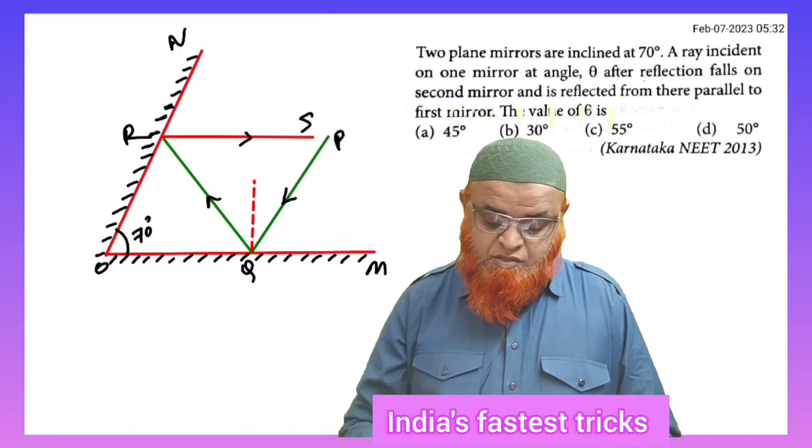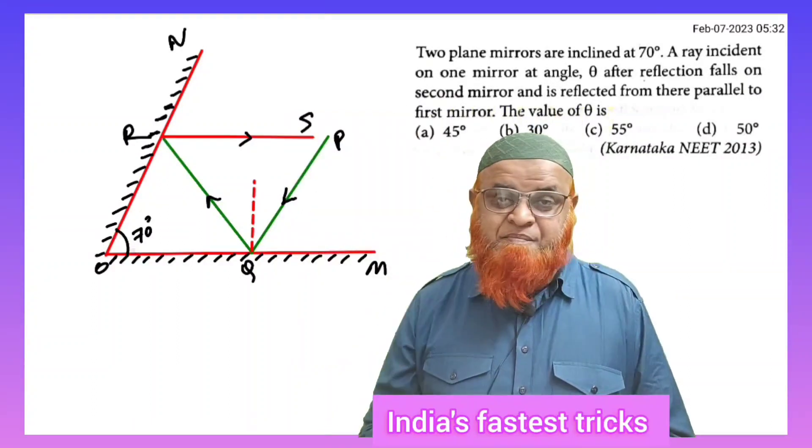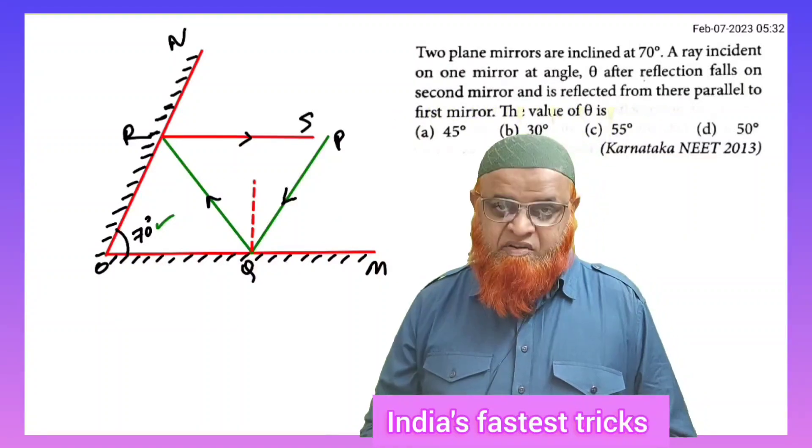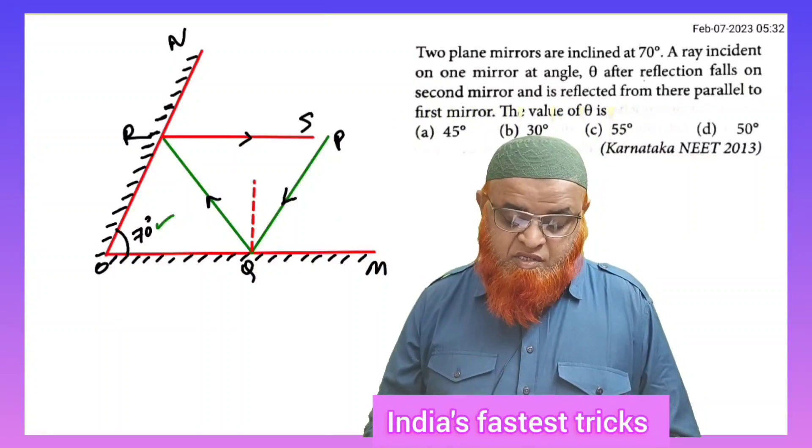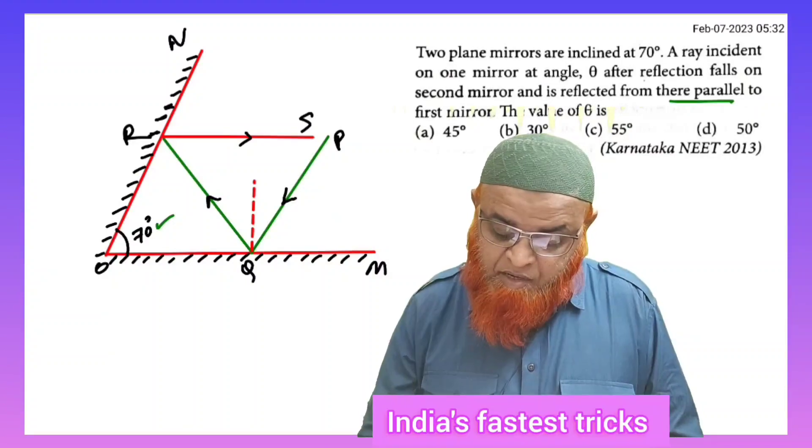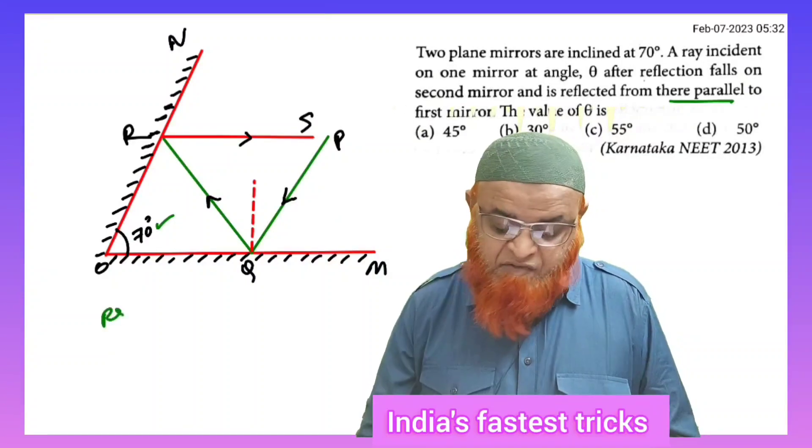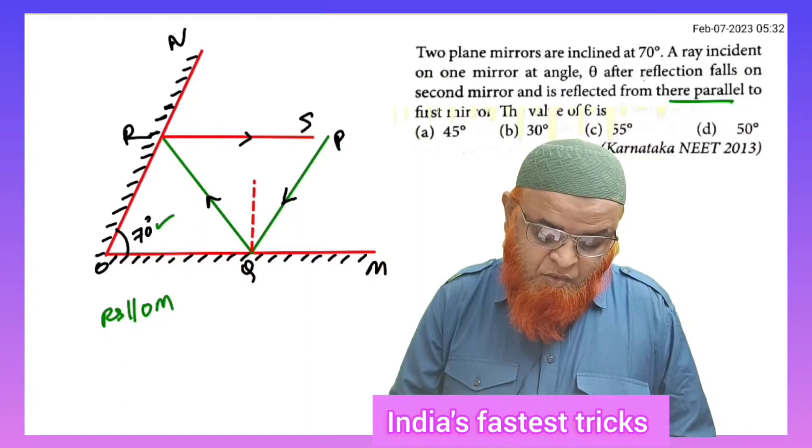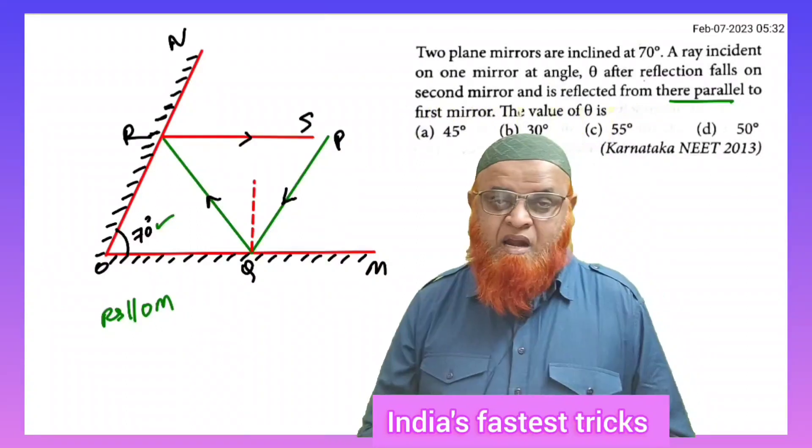Then you should remember one thing here that this angle between the two mirrors is given as 70, and it is also said that according to the problem it is reflected parallel, that means here RS is parallel to OM.